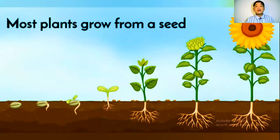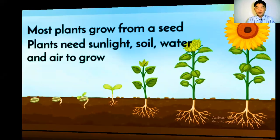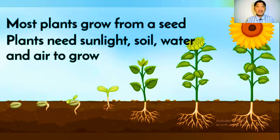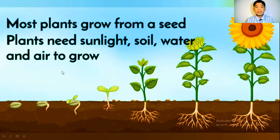Most plants grow from a seed because plants are able to reproduce, especially through flowers and fruits. Plants need sunlight, soil, water, and air to grow. Without sunlight, without soil, without water and air, it is really impossible to make the plants grow. These are some of the most important things that plants need.